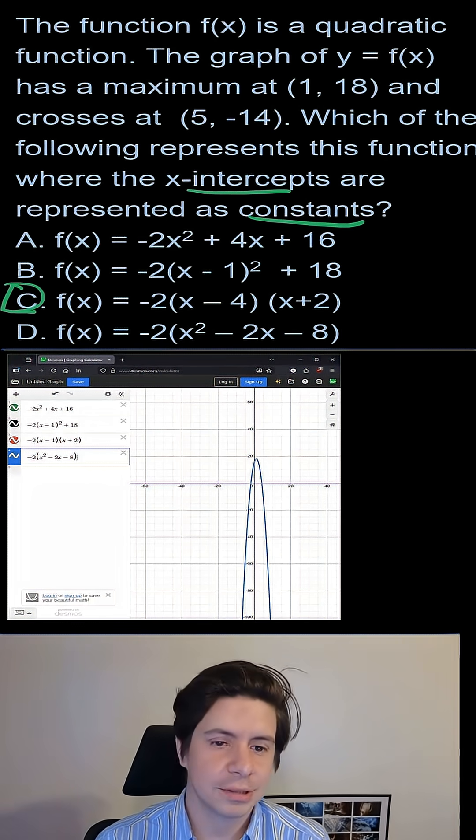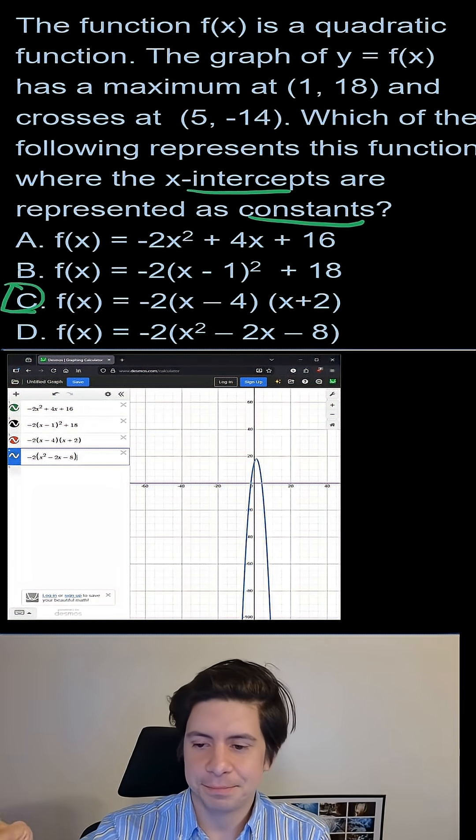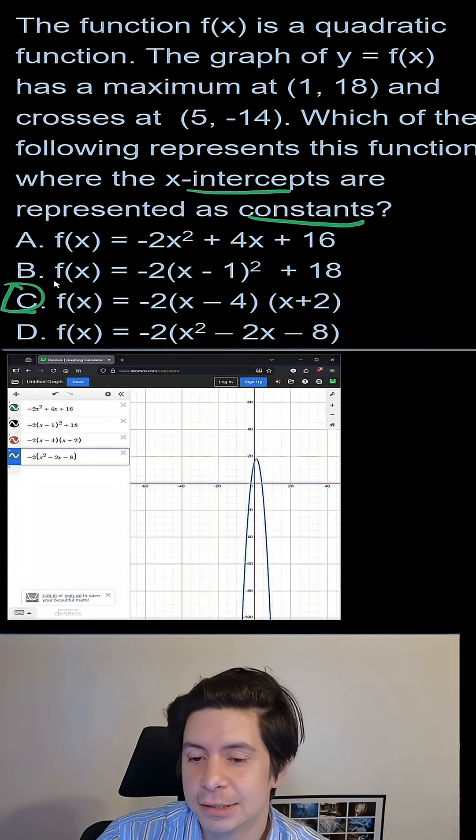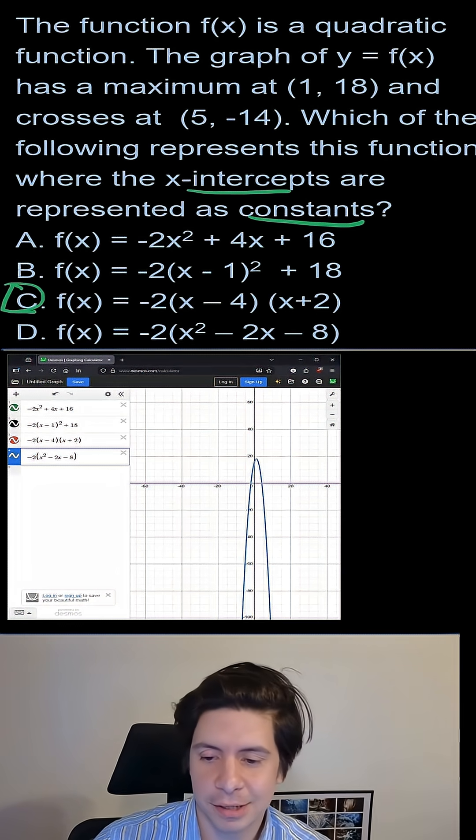So this could be like an equivalent expressions question. Maybe it's a nonlinear functions question. But it's all about understanding how these different ones work. If they had asked for which of them represents the vertex as constants, then B would be the correct answer. If it said which of them gives a y-intercept as a constant, then A would be the correct answer.